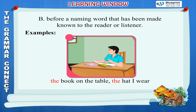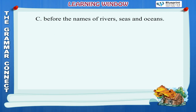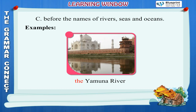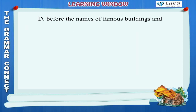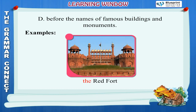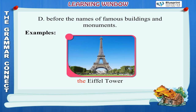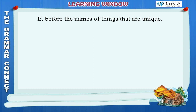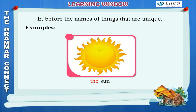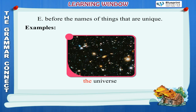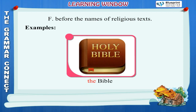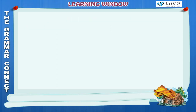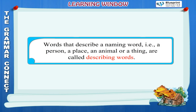Use 'the' before a naming word that has been made known to the reader or listener. Examples: The book on the table, the hat I wear. Before the names of rivers, seas and oceans: The Yamuna River, The Red Sea, The Indian Ocean. Before the names of famous buildings and monuments: The Red Fort, The White House, The Eiffel Tower. Before the names of things that are unique: The sun, the moon, the earth, the universe. Before the names of religious texts: The Bible, The Ramayana, The Gita.